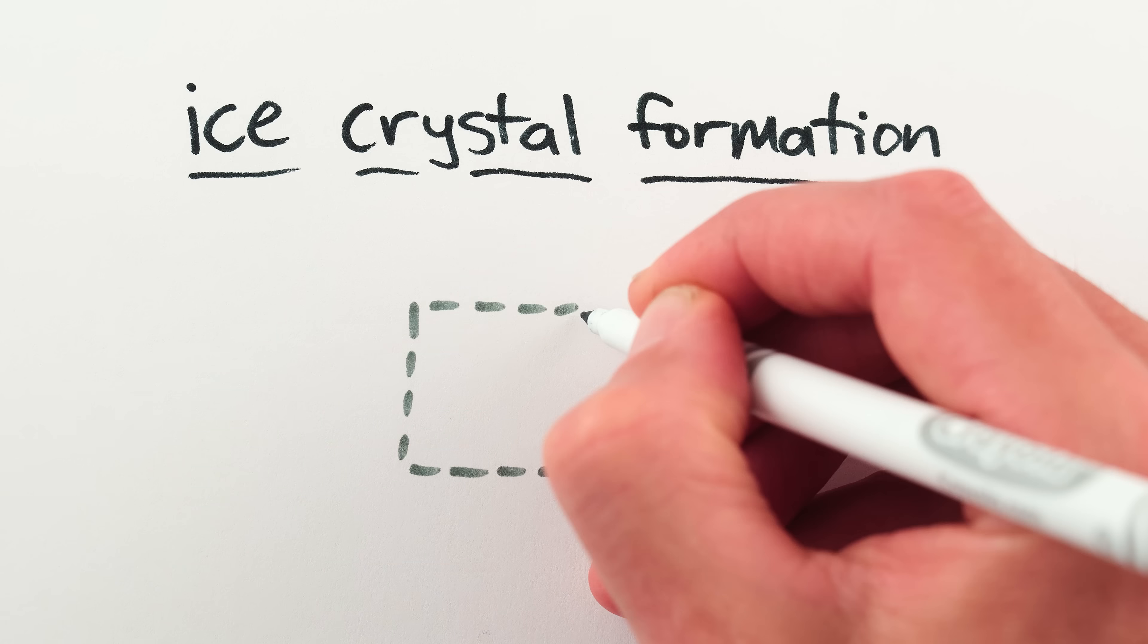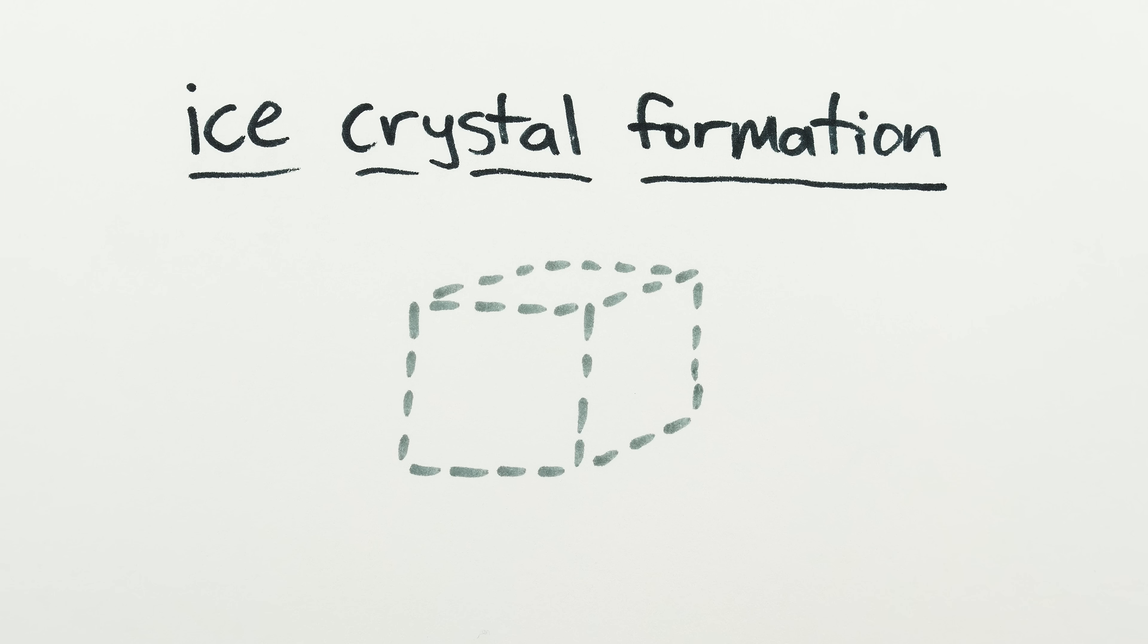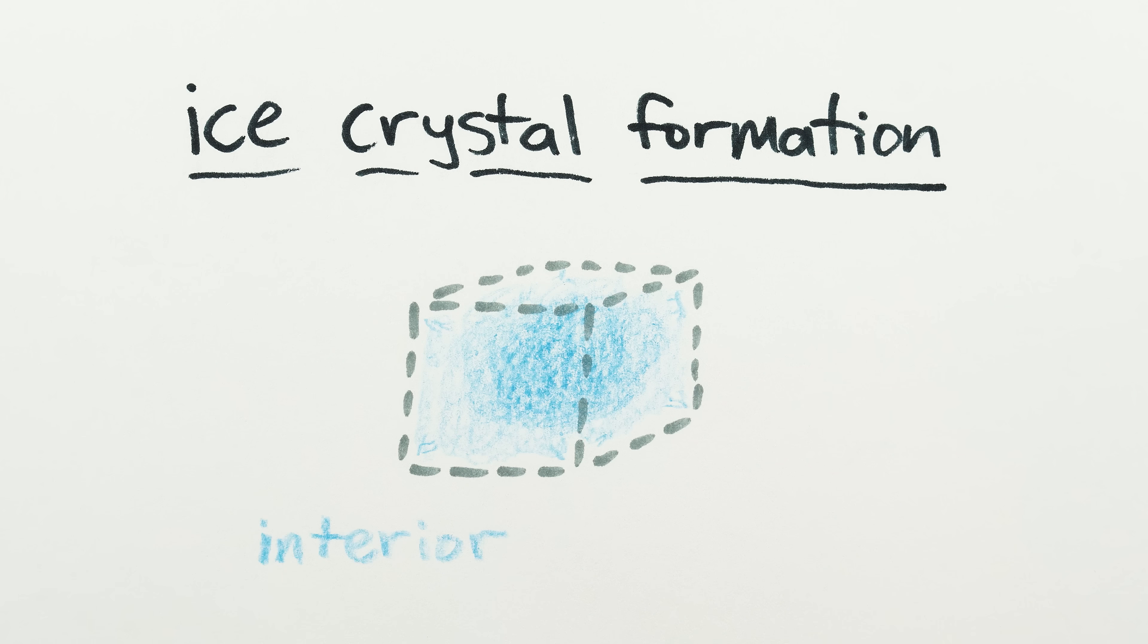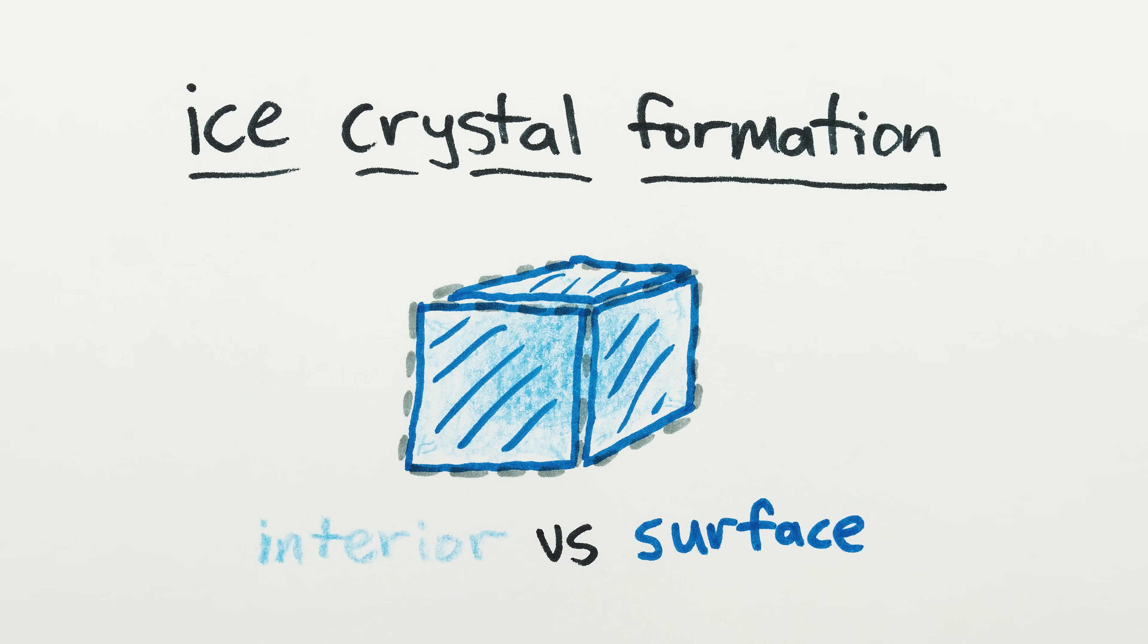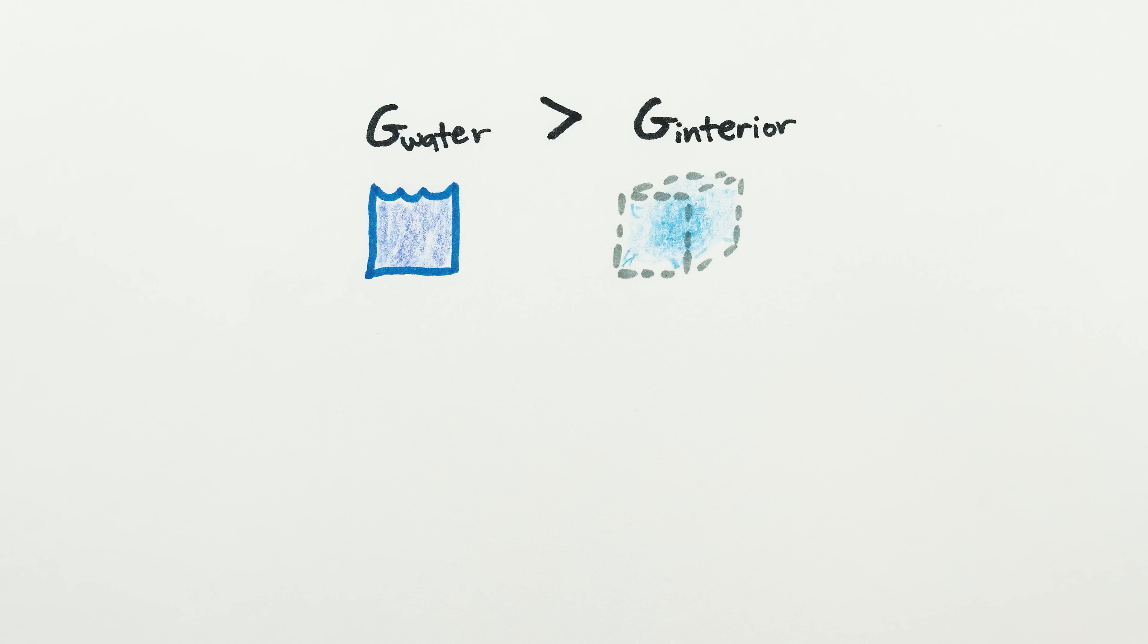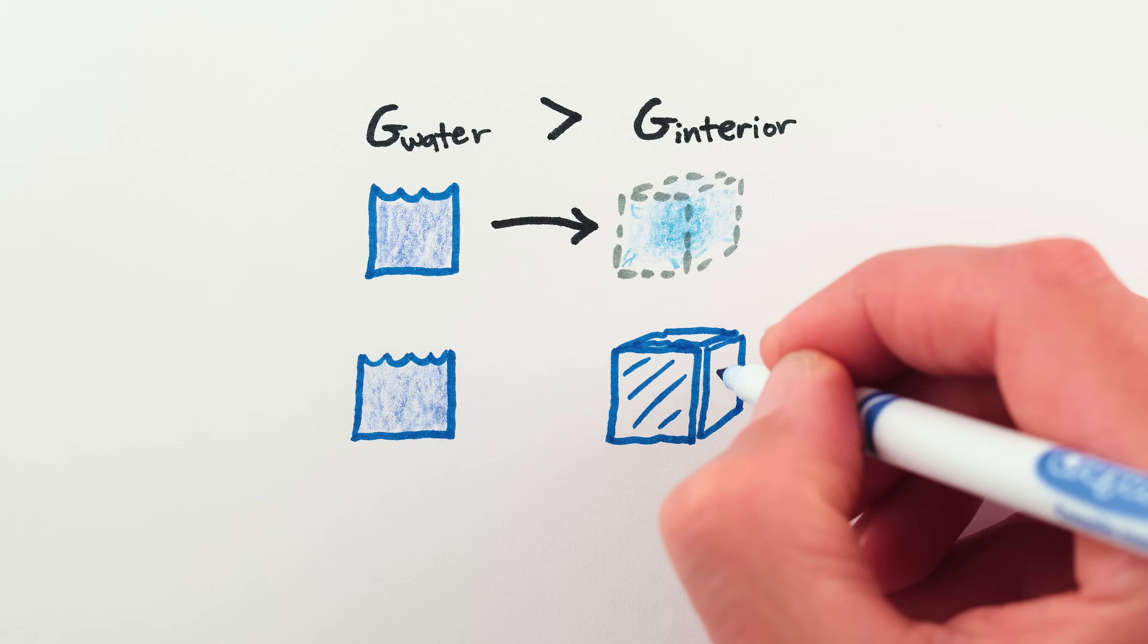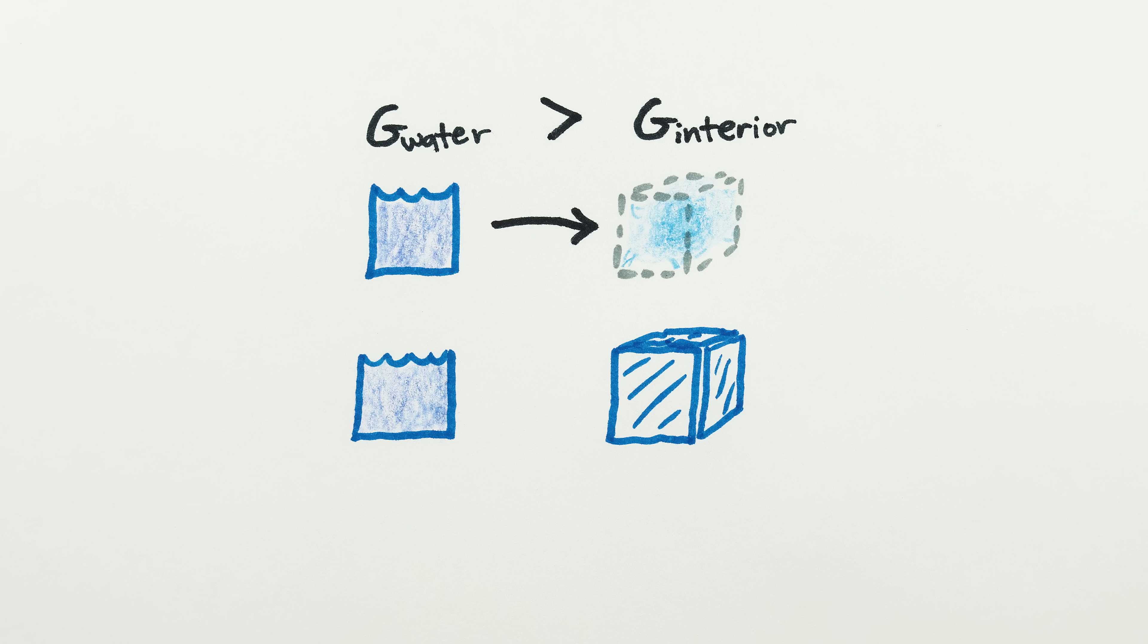The basic reason supercooling is possible in the first place is that the formation of ice crystals in water has two competing factions, the interior and the surface. The interior of ice has less energy than liquid water, so the interior wants to freeze. But the surface of ice, the boundary between the ice and the liquid water, actually takes more energy to form than if it just stayed liquid, so it wants to stay liquid.